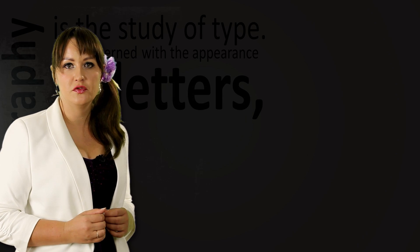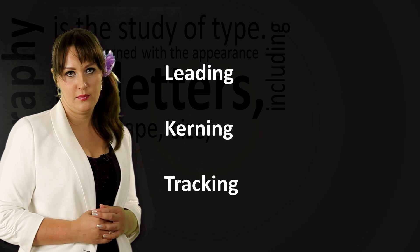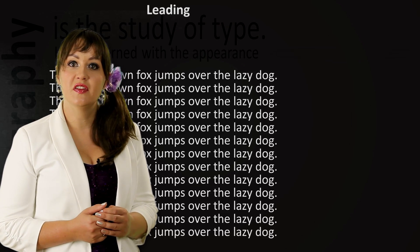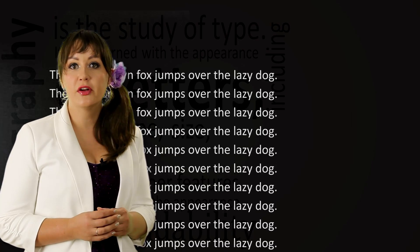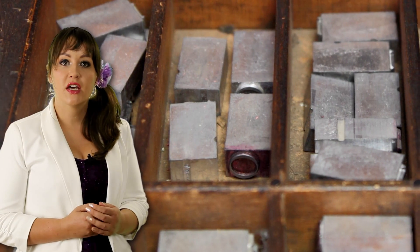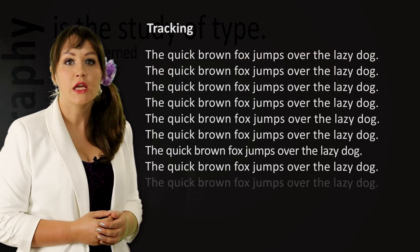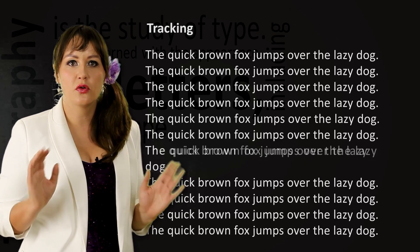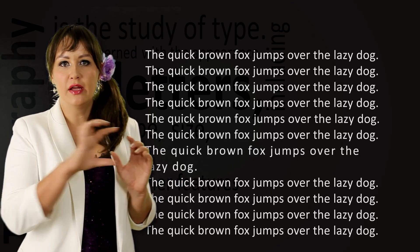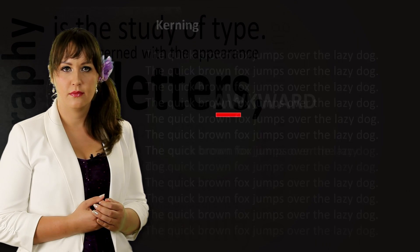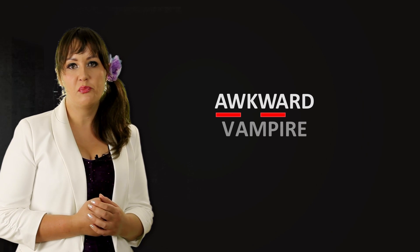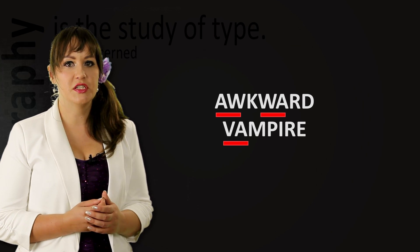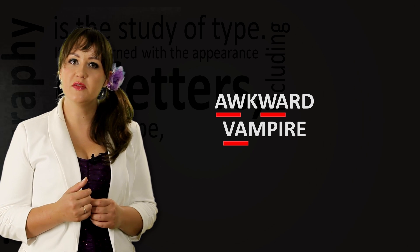Now let's talk about several terms used in typography: leading, kerning and tracking. Leading is the distance between successive lines of text. The term comes from the lead strips that were inserted between the lines to increase the vertical distance between them. Because the strips were made from lead, the word is pronounced 'ledding', not 'leeding'. Tracking, or letter spacing, means increasing or decreasing the space between all letters in one line or in a whole block of text. Kerning is the process of adjusting the spacing between individual characters to achieve a visually pleasing result. In our example, kerning was adjusted between letters A and V, as well as between W and A.